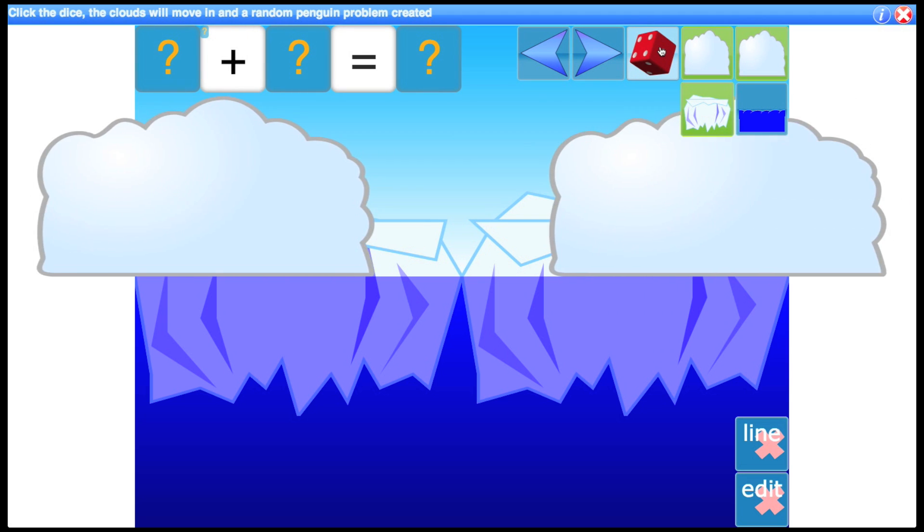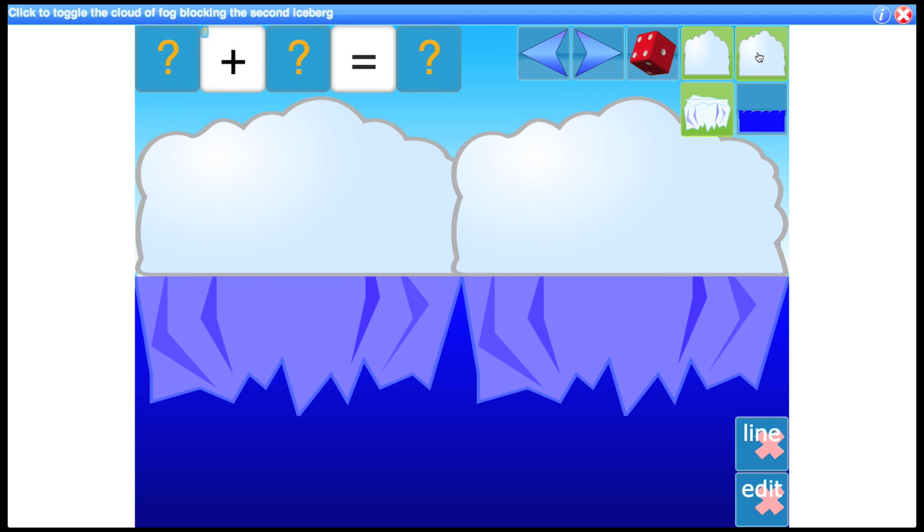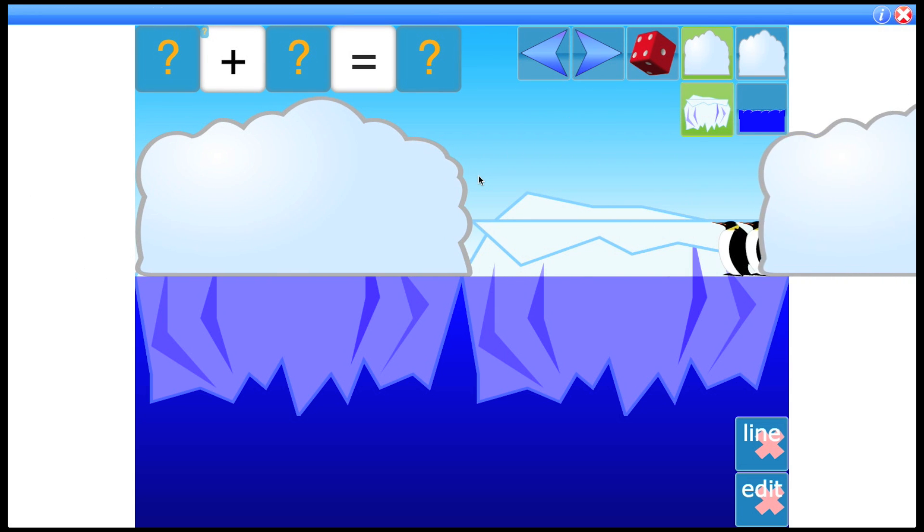So of course you don't have to do it in that order. You could reveal what's on the second cloud. 2. Reveal this which is 3, and so then the students would be able to deduce that this must be 5.